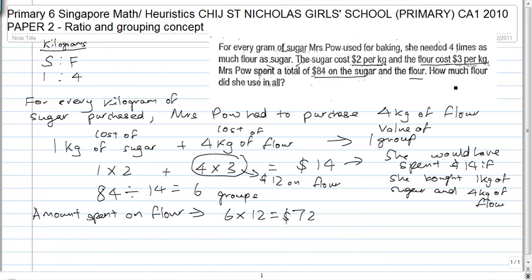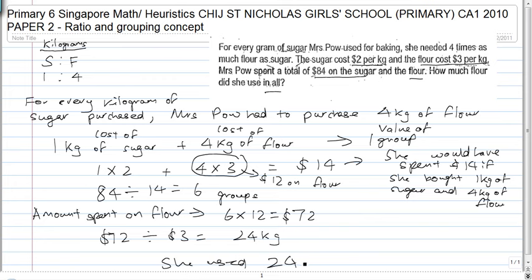Now, they're asking how much flour did she use in all. All you have to do is take $72 divided by $3 — since each kg of flour costs $3 — and you get 24 kg. She used 24 kg of flour.